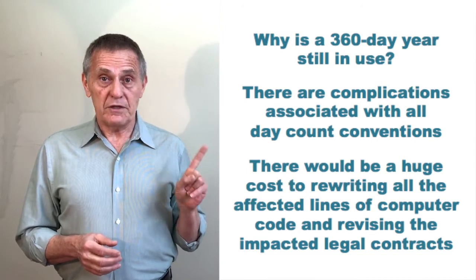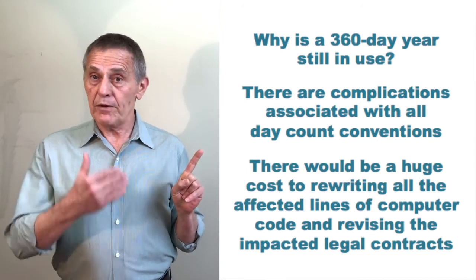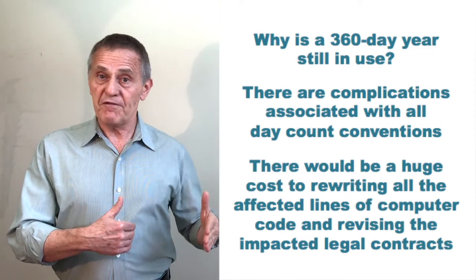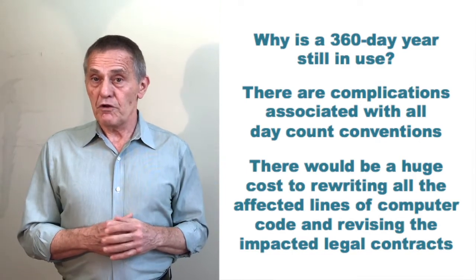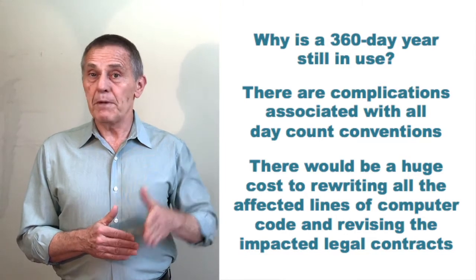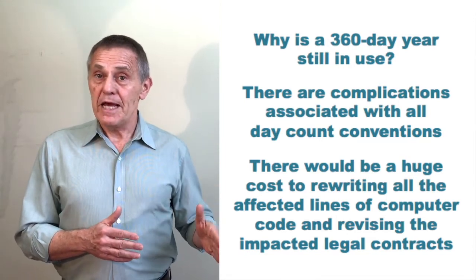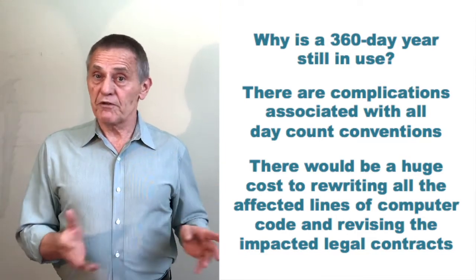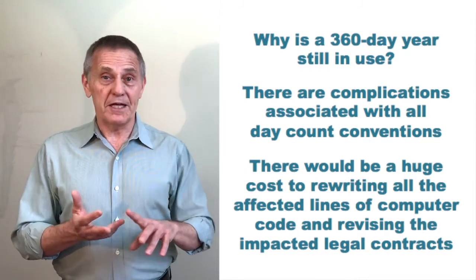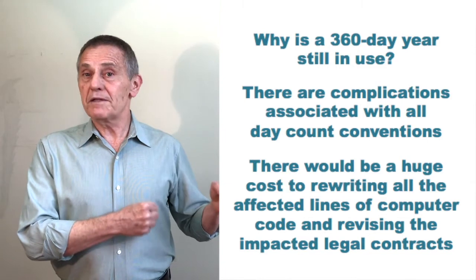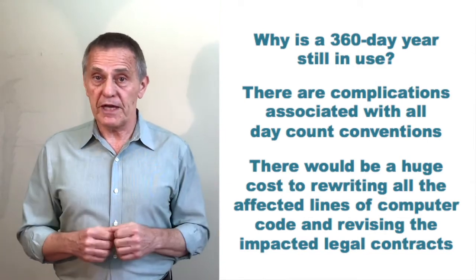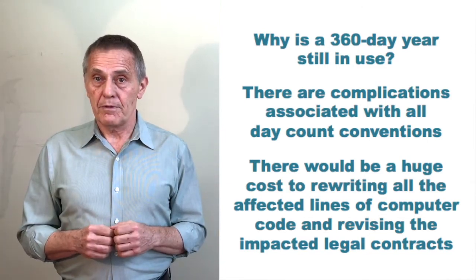And in 30/360, note that that implies that going from the same day of the month to the same day of the following month or any subsequent month is always 30 days apart. So if I'm going from the tenth of one month to the tenth of the following month, it doesn't matter whether the actual number of calendar days is 28, 29, 30, or 31, by convention going from the same day of one month to the same day of the following month will be 30 days.